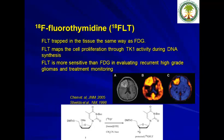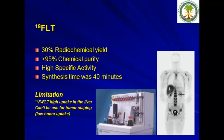Another PET radiopharmaceutical is fluorothymidine (FLT). FLT is used for cell proliferation through thymidine kinase, and it is more sensitive than FDG in evaluating recurrence of high-grade gliomas and monitoring treatment response. It can be produced using an automated synthesizer with very good yield and high radiochemical purity. However, this radiotracer has a limitation: very high uptake in the liver.